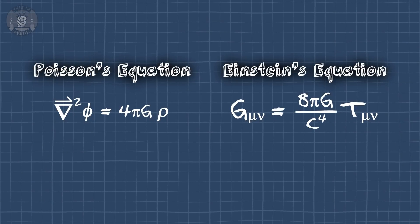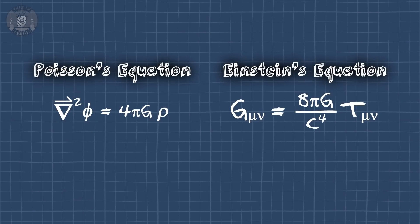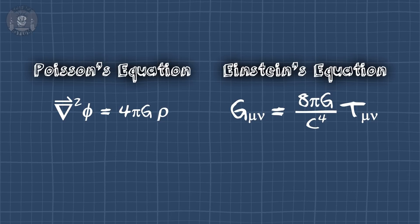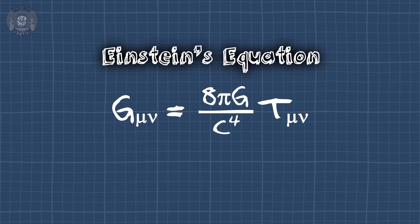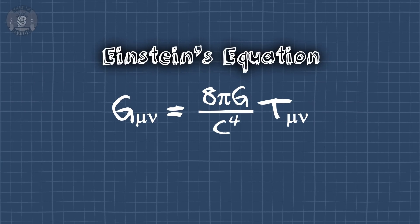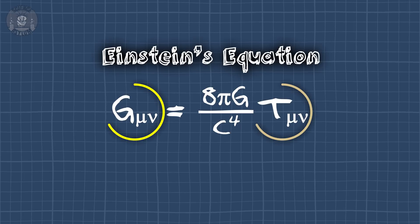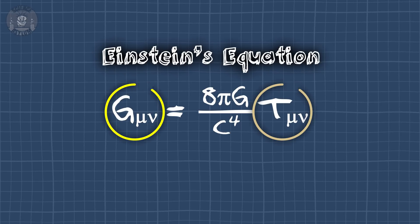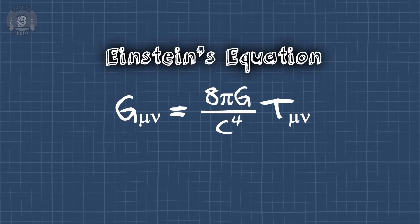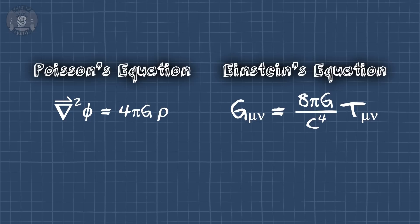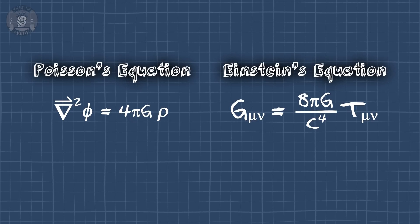Bubbles bursted! That gravitational well does look kind of like a fabric. Almost like Poisson's equation is only one step away from Einstein's. In fact, Einstein's equation is also an energy equation — every term in here is energy adjacent. So under the right conditions, it should simplify to Poisson's equation. And that's exactly what happens.